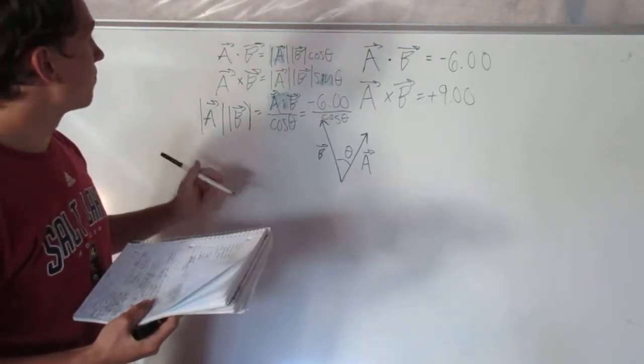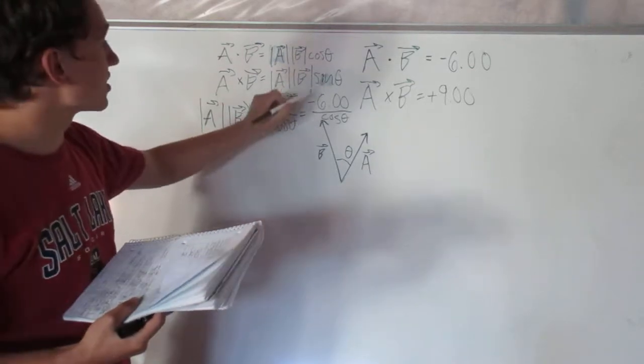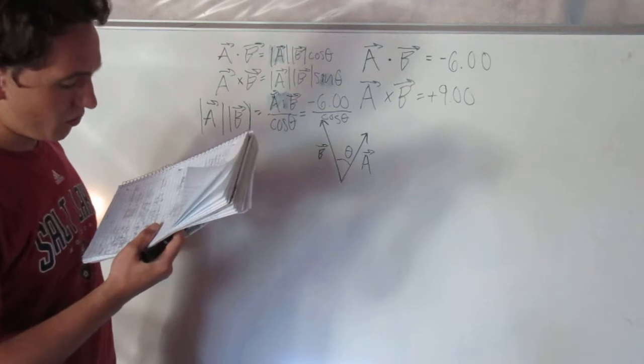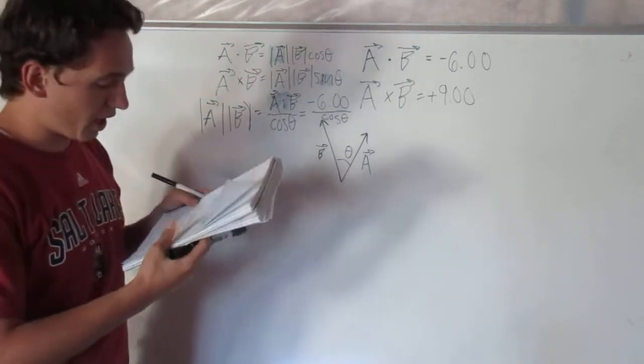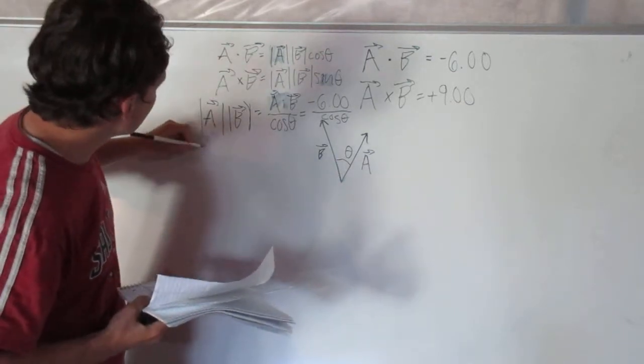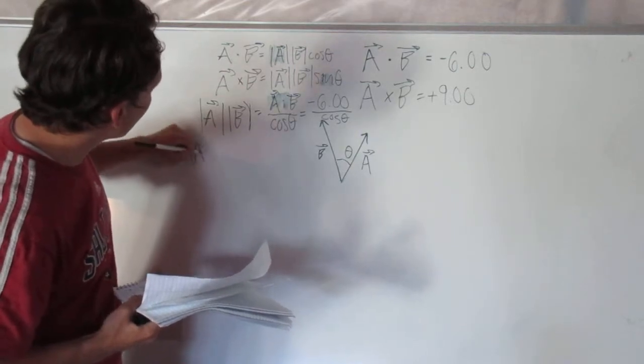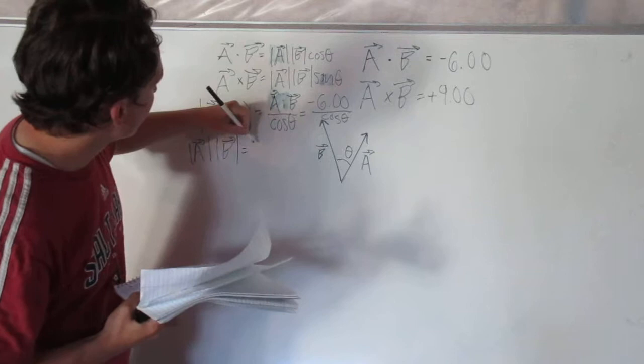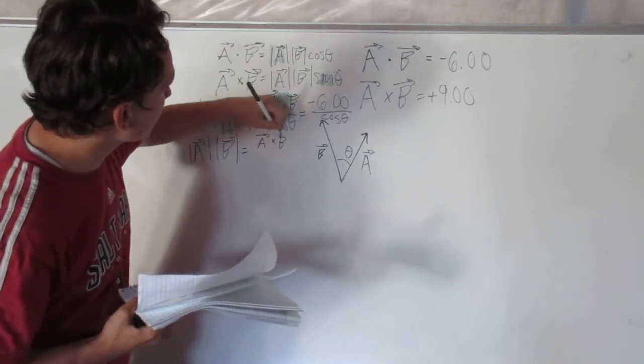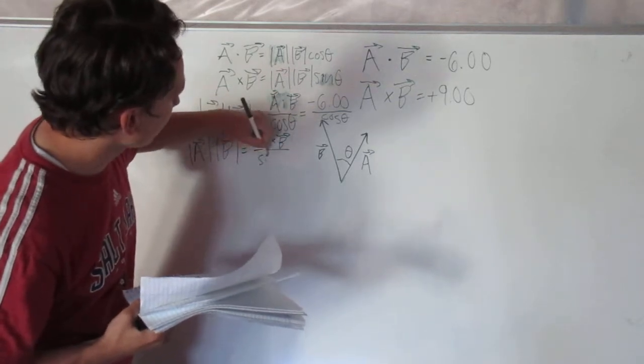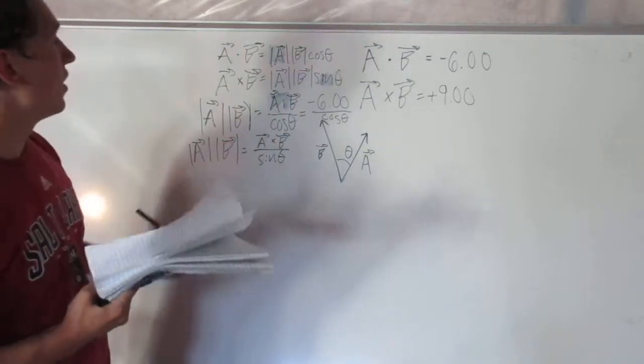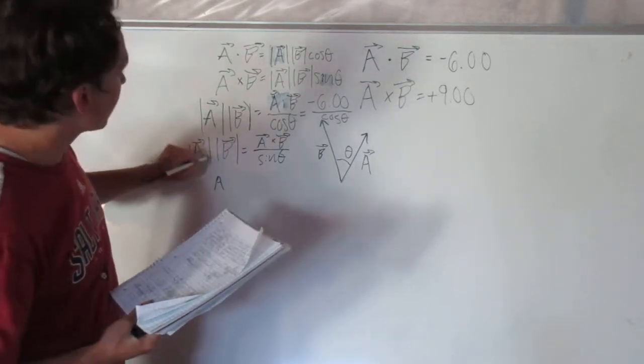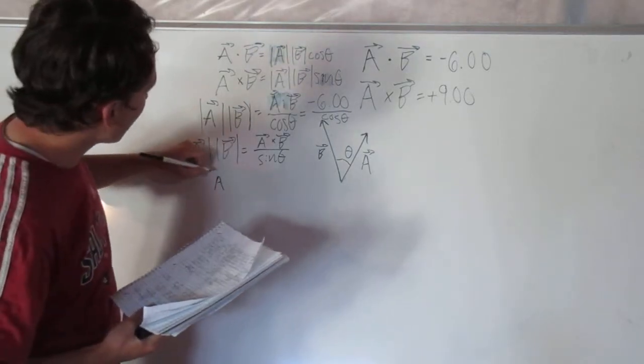Now why that's useful is we can solve this as a system of equations. If I solve the cross product for the magnitude of A times the magnitude of B, I get A cross B over sine of theta, which is positive 9.00 over sine theta. What's nice is I can set these two equations equal because they're both equal to the magnitude of A times B.